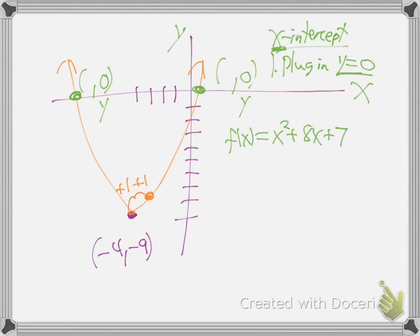Because that's what it means - those dots are at a height of zero. So I'm going to take this equation and make y zero. First off I don't even see y - where's y in this equation? It's the f of x - remember, the function letter is your y. So put zero right here, because that's really y.